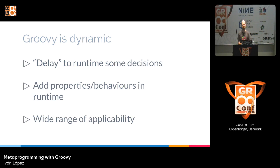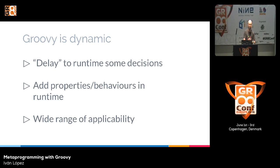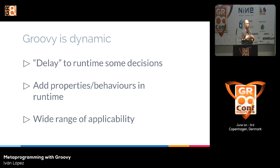So Groovy is a dynamic language. With a dynamic language, we can delay and postpone some decisions and checks that the compiler usually does during compilation time — we can postpone them to runtime. With this, we can add new properties, new methods, and new behavior to our code during runtime. We can create DSLs, builders, logging or tracing tools. Because of this dynamism and all the metaprogramming features, we can organize our codebase better and solve problems in a different way than with a static compiled language.